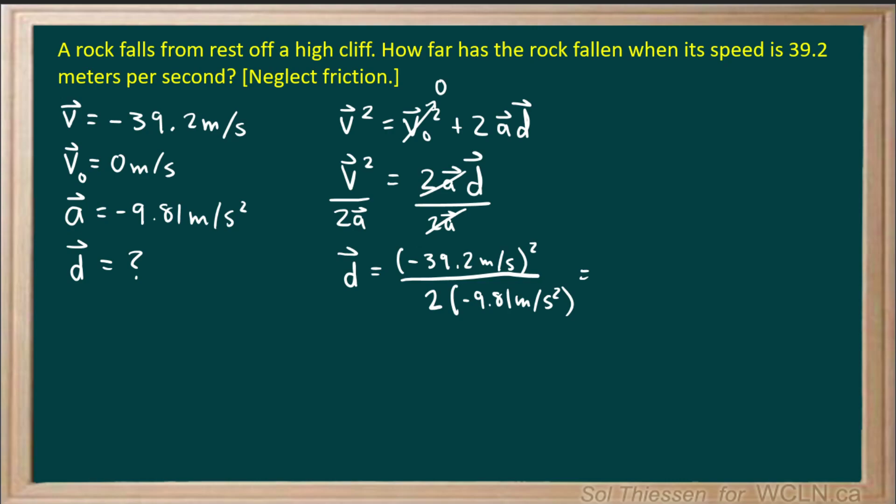In the numerator there, negative 39.2 squared is going to give us positive 1536.64 meters squared per second squared. Notice that I'm keeping many more significant figures than I should for now. I should only have technically three significant figures in the numerator, but I'm just doing this so that we have a more exact result in the end.